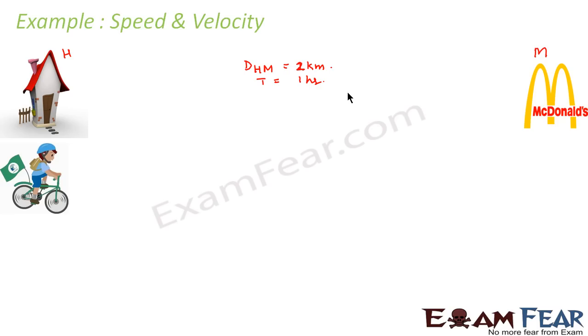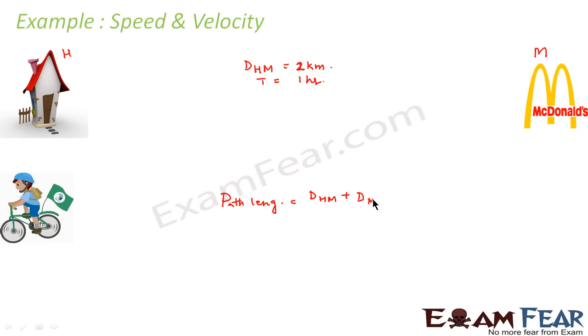Now let us suppose that Ronnie goes from his home to McDonald's and then he comes back from McDonald's to home. Now in this case, the distance, that means the path length for the entire journey, would become distance from home to McDonald's plus distance from McDonald's to home. So that will be 2 plus 2, that is equal to 4 kilometers. And in this case, the displacement would be equal to 0 because he starts from his home and comes back to home.